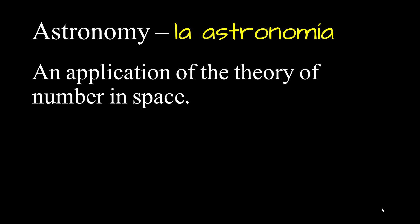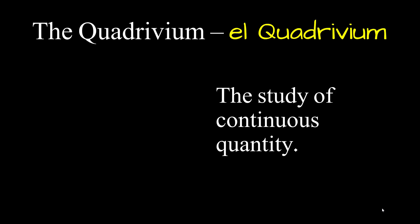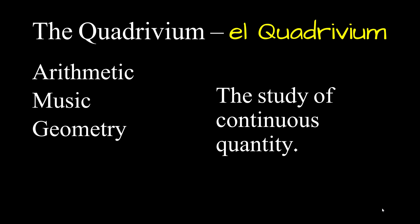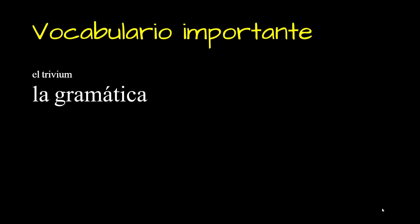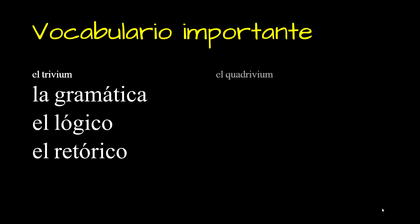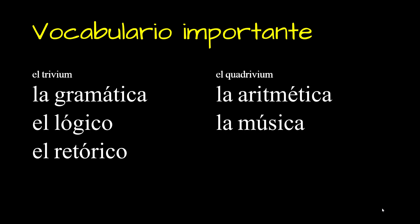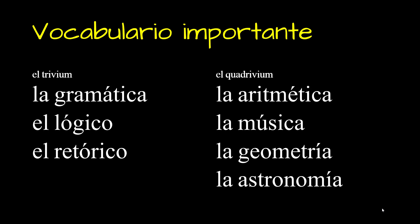Over the next 24 hours, think about those definitions. The quadrivium is the study of continuous quantity. Your task in español is to memorize these nine words: la gramática, el lógico, y el retórico; el quadrivium — la aritmética, la música, la geometría, y la astronomía. You should be able to tell me which arts make up the trivium and which make up the quadrivium, both in English and in Spanish.